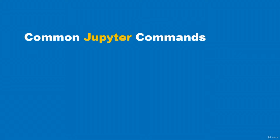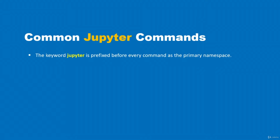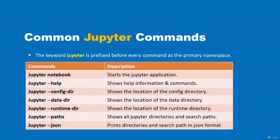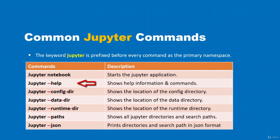In this video, I'm going to show you some common and useful Jupyter commands. All Jupyter commands are prefixed with the keyword jupyter before the sub-commands are issued — the jupyter keyword is the primary namespace for all sub-commands. The command to start the Jupyter Notebook is: jupyter notebook. If you want to see all available commands and information, type: jupyter --help, and that will show you the available commands.